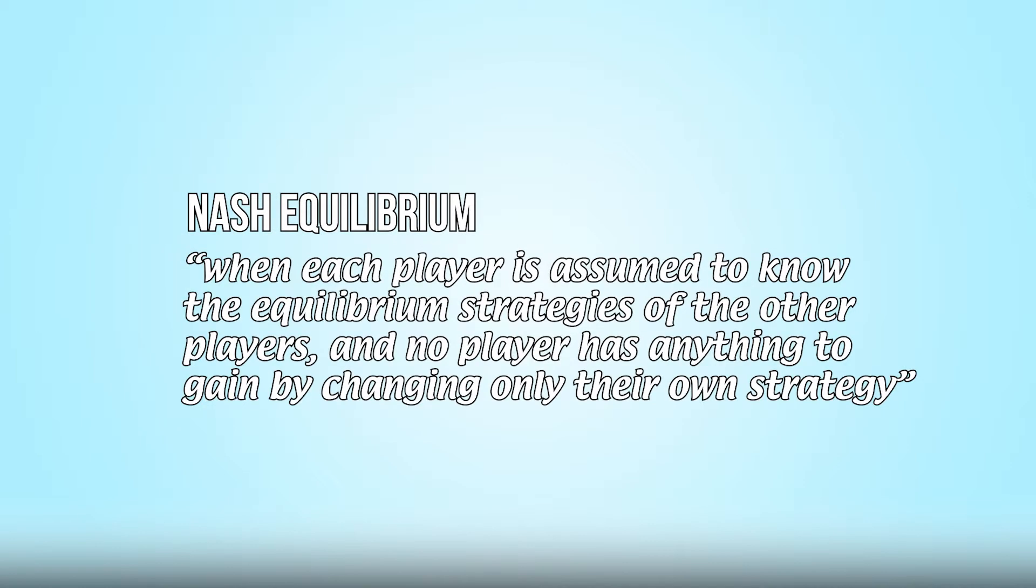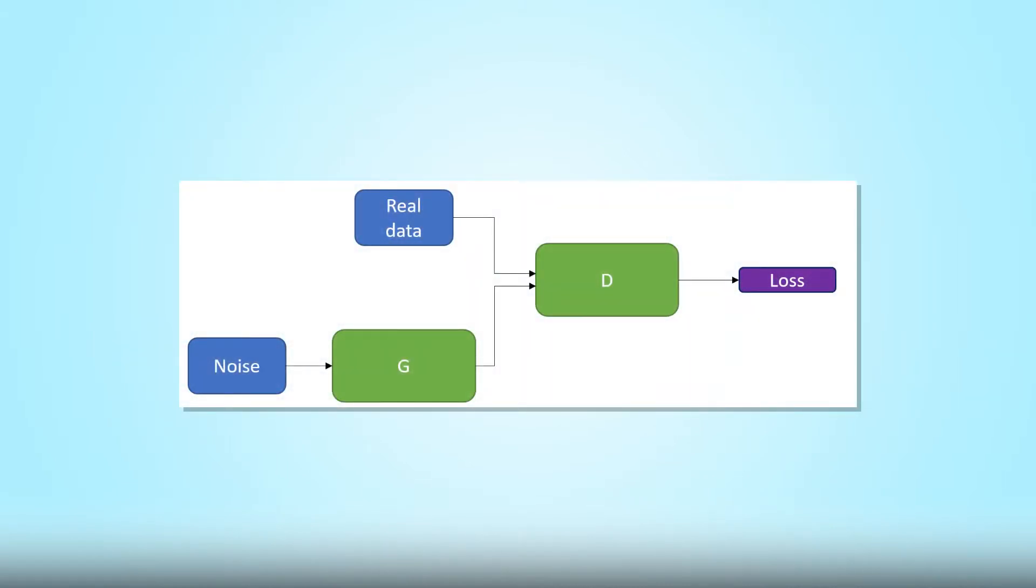In our case, this means when G produces data, the D cannot tell from real data. To simplify, the training process follows three main steps. G first generates a music sample from random noise data.